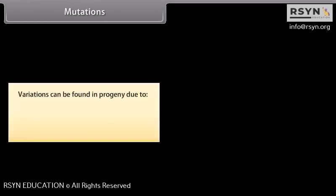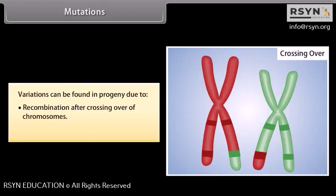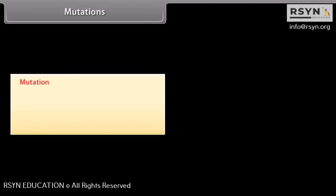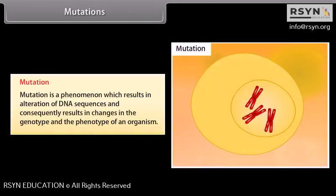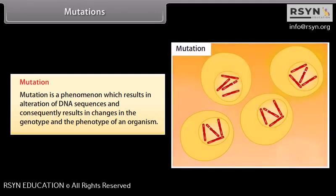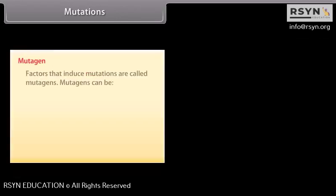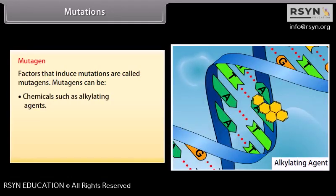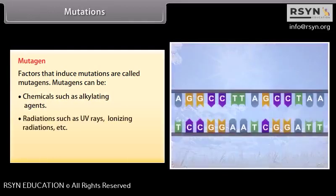Mutations. Variations can be found in progeny due to: 1. Recombinations after crossing over of chromosomes, and 2. Mutations. Mutation is a phenomenon which results in alteration of DNA sequences and consequently results in changes in the genotype and phenotype of an organism. Factors that induce mutations are called mutagens. Mutagens can be chemicals such as alkylating agents, radiations such as UV rays, ionizing radiations, etc.